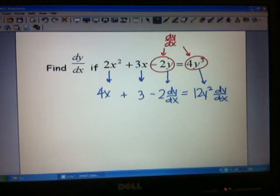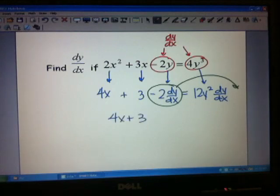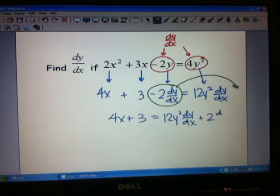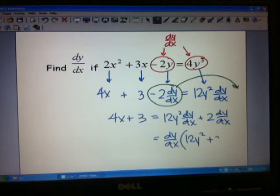Now, same as in the last problem. I want to get my dy/dx pieces together and separate from everything else. And so I'm going to take this one over to this side. So I'll end up with 4x plus 3 over here. And that's going to be equal to 12y squared dy/dx plus 2 dy/dx. Well, now I've got dy/dx in both terms over there. So I can factor out a dy/dx. And I'd be left with 12y squared plus 2. I still have my 4x plus 3 over here.